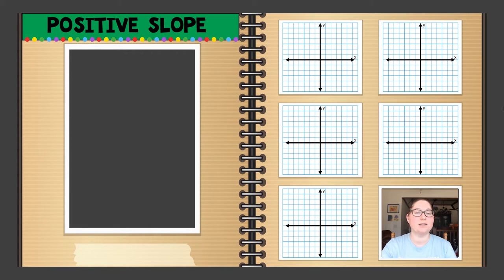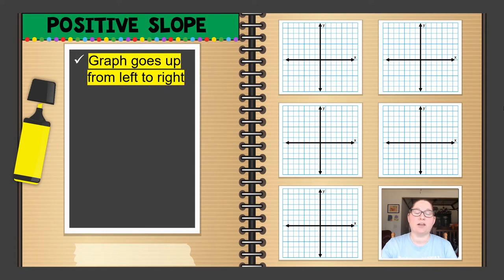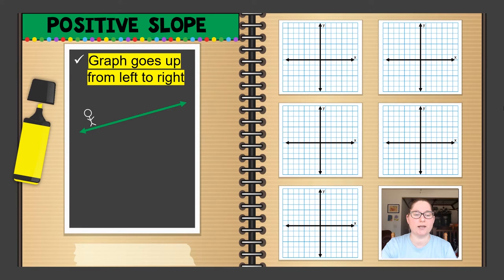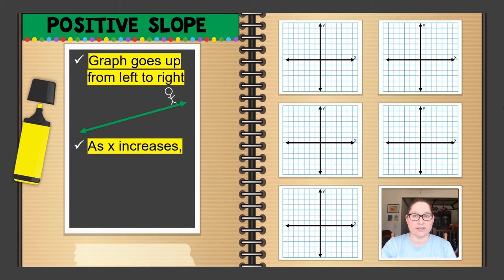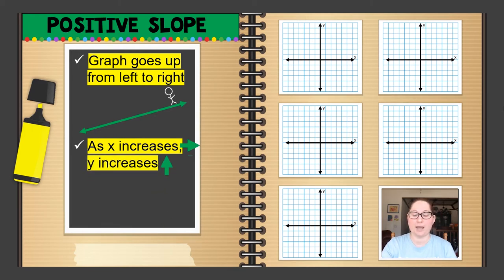The first slope we are going to look at is positive slope. With a positive slope, we see a graph that goes up from left to right. For example, if you see this line, I draw a person on the left side of the line — we always start at the left side — and the person makes his way to the right side. That person is going up, so that is a positive slope. As X increases, the more you go to the right, your Y value is also increasing.